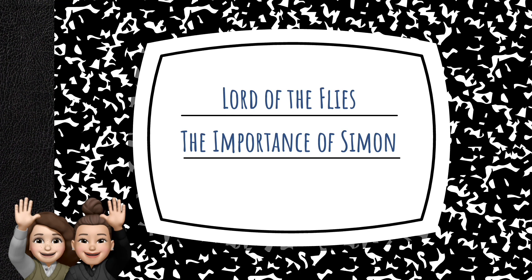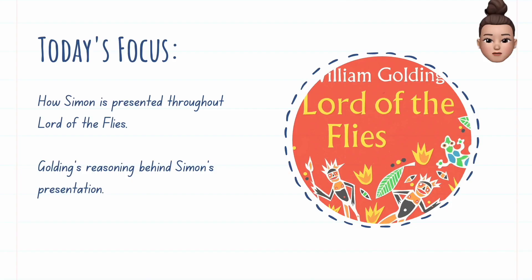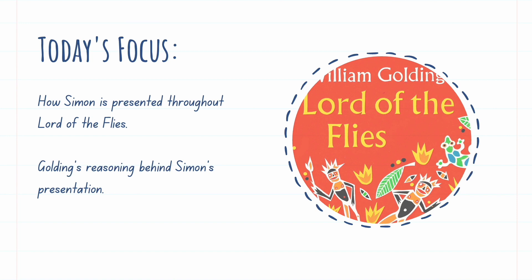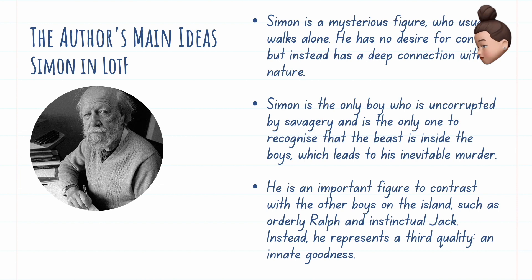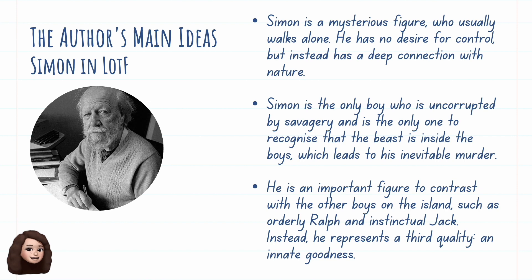Welcome to your English revision. Today we are looking at Lord of the Flies — the importance of Simon. Today's focus is how Simon is presented throughout Lord of the Flies and Golding's reasoning behind Simon's presentation. Simon is a mysterious figure who usually walks alone. He has no desire for control but instead has a deep connection with nature. He is the only boy uncorrupted by savagery and the only one to recognize that the beast is inside the boys, which leads to his inevitable murder. He represents a third quality — an innate goodness — contrasting with orderly Ralph or instinctual Jack.